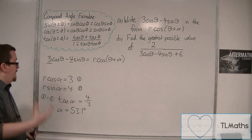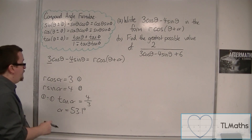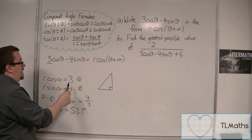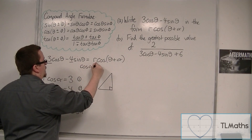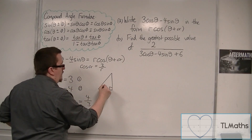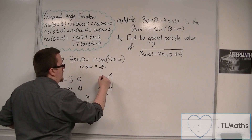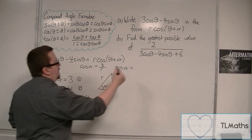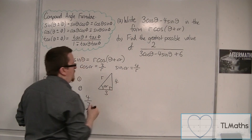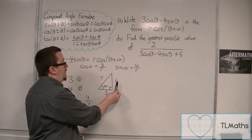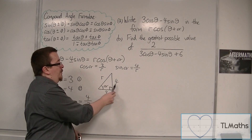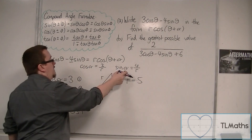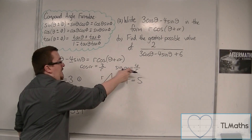Now I need to work out the value of r, so I'm going to use a triangle. Cosα equals 3 over r, rearranging equation 1 — the cosine of the angle equals adjacent over hypotenuse. And rearranging equation 2, sinα equals 4 over r, so the opposite of the triangle must be 4. Using Pythagoras: 3 squared plus 4 squared equals r squared. You can spot it's a 3-4-5 triangle, so r must equal 5. Alternatively, using sin²α + cos²α = 1 and substituting, you still get 5.